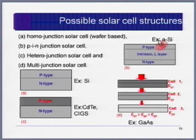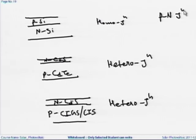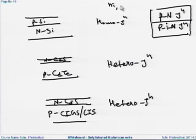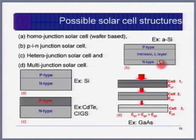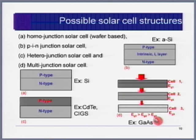Amorphous silicon uses a PIN junction rather than a PN junction. The I layer is intrinsic — undoped. Cell configurations also include multi-junction designs with cells of different band gaps stacked together: the top cell has the highest band gap, the middle cell has a lower band gap, and the bottom cell has the lowest band gap.